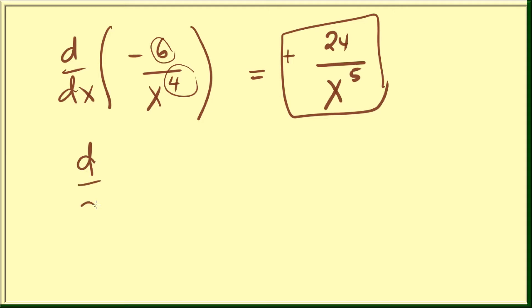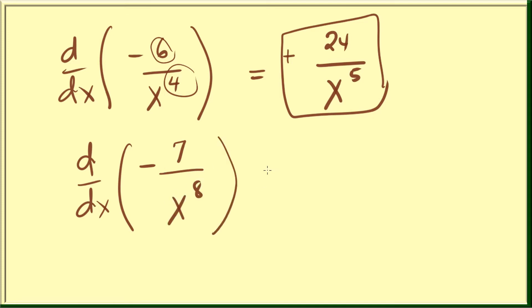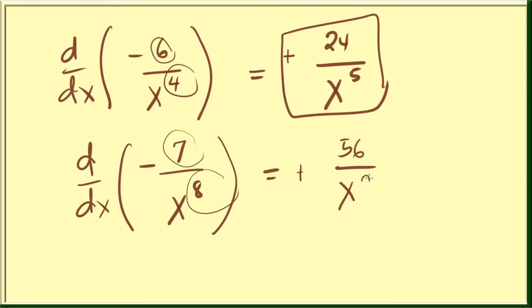One more: find d/dx of negative 7 over x to the 8th. From negative, our derivative is now positive. 7 times 8 equals 56, over x to the 9th.